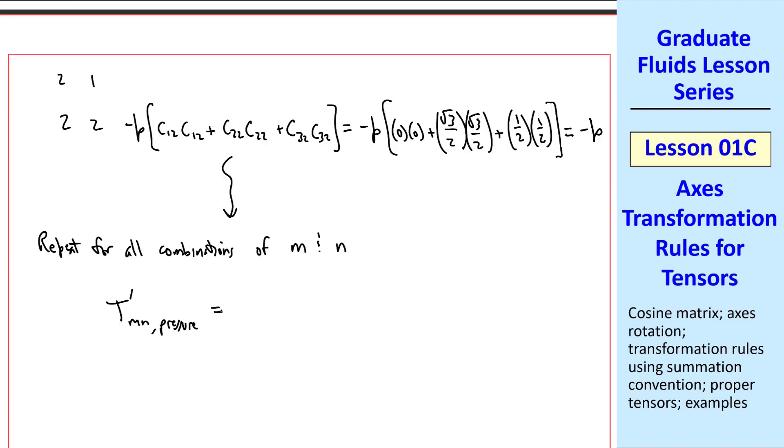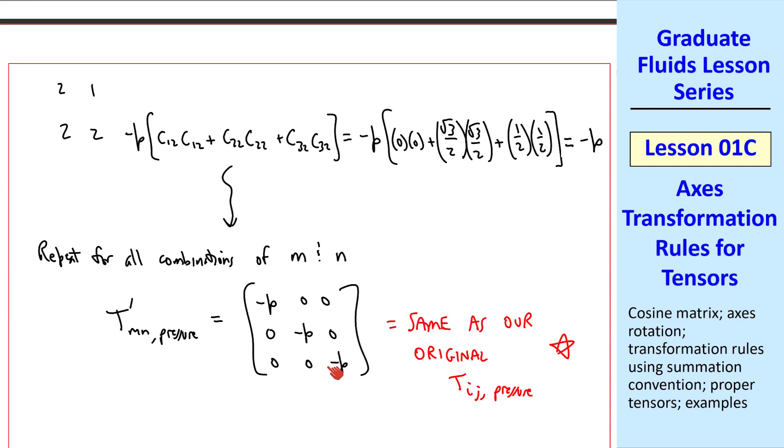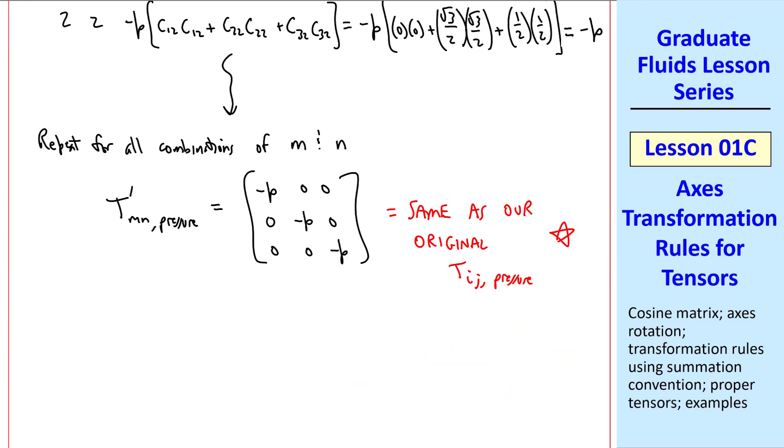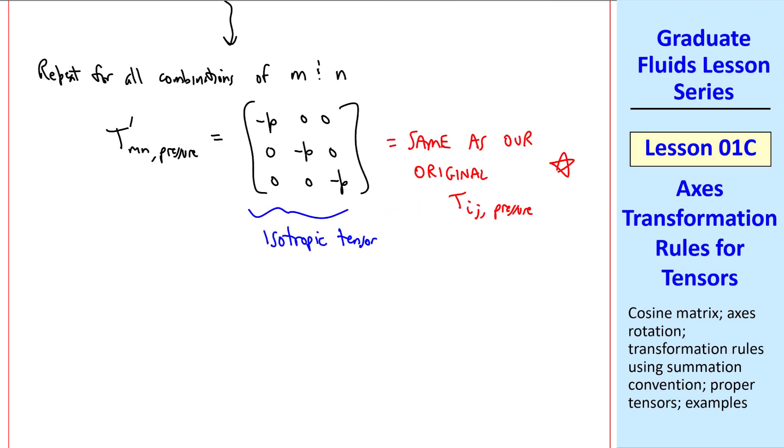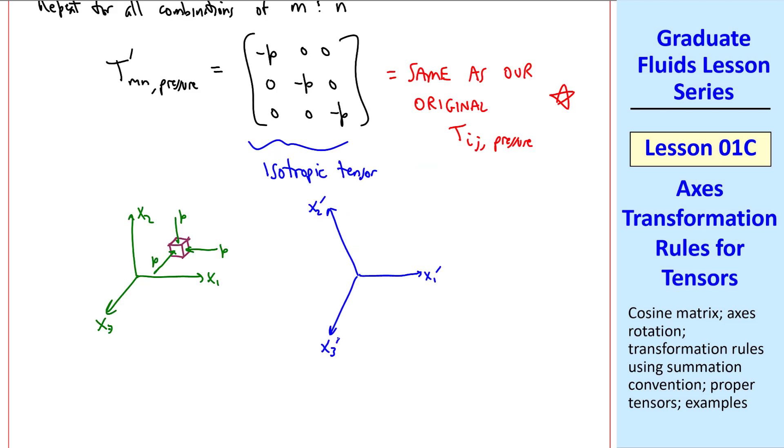My final result for the rotated T'_mn pressure is negative p, 0, 0, 0, negative p, 0, 0, 0, negative p, which is the same as our original T_ij pressure. In other words, all these calculations we did ended up yielding exactly the same tensor. This is a unique situation. It works because this is an isotropic tensor. Physically, the pressure is the same at any surface, regardless of the axes. In our original axes, if we have some fluid element aligned with the axes, the pressure is normal to any surface. In our rotated axes, and again with an element that's aligned with these axes, the same pressure, which is a force per unit area, acts on any of these faces. This would be the case regardless of how we rotate the axes. That's because this is an isotropic tensor. For a general tensor, when we rotate the axes, all nine of these will change.